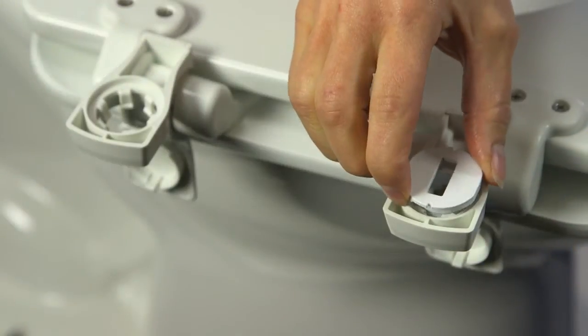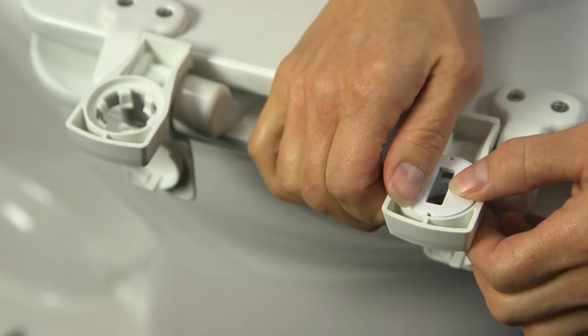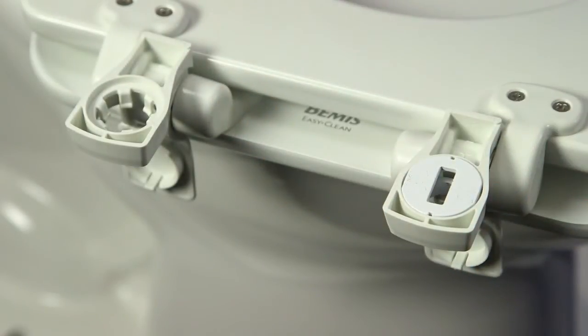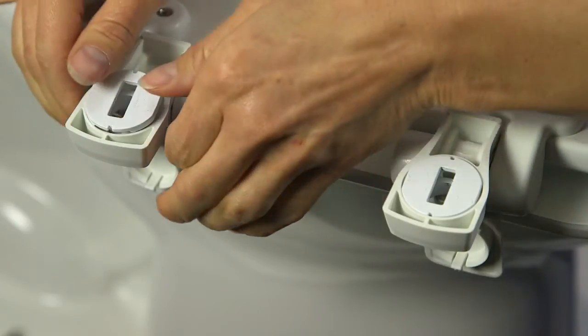Begin by inserting the easy clean and change bolt heads into the bottom of the hinge bodies. Be sure that the slots are aligned straight up and down in the hinge.